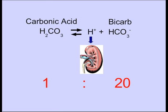Welcome back to part three on bicarb. First, an explanation of where bicarb comes from. You might remember from part one how CO2 combined with water under the presence of carbonic anhydrase to form carbonic acid.